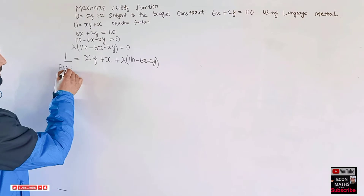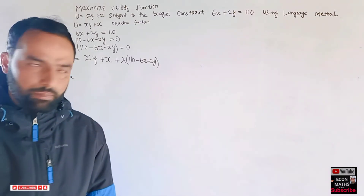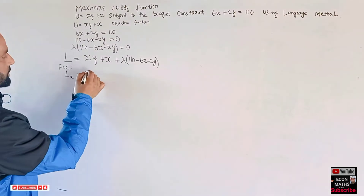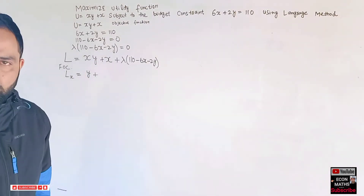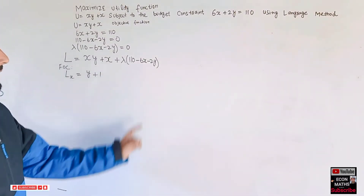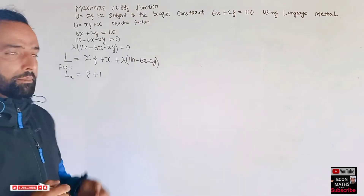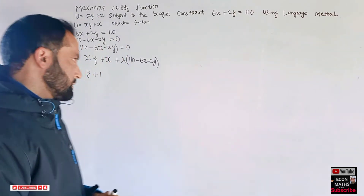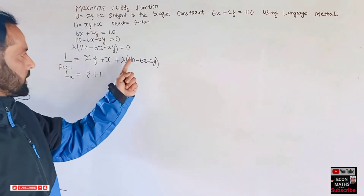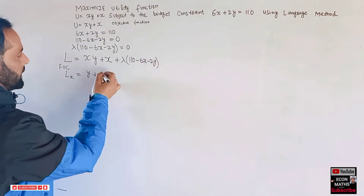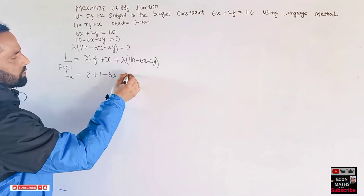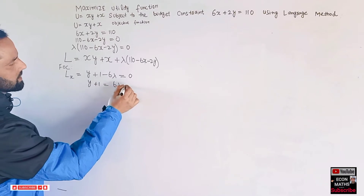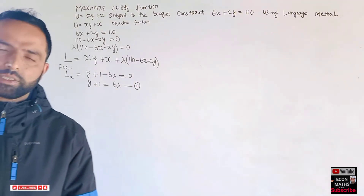Taking the partial derivative with respect to x: the derivative of xy gives y, the derivative of x gives 1, and the derivative of the constraint term gives -6λ. So we have y + 1 - 6λ = 0, which rearranges to y + 1 = 6λ. Let this be equation one.